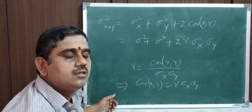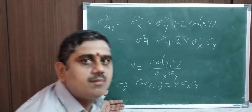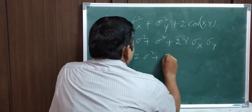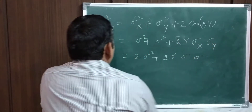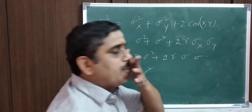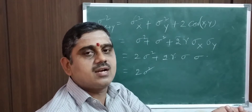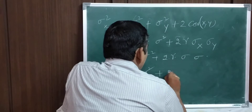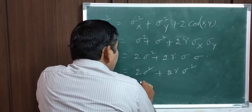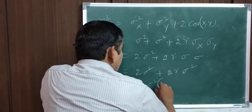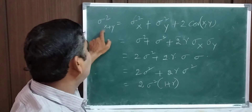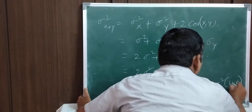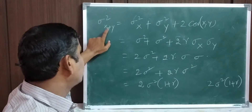Since x and y have the same variances, sigma squared x equals sigma squared y equals sigma squared. Also, the formula for correlation gives covariance(x, y) equals r times sigma x times sigma y. Substituting, variance of x plus y equals sigma squared plus sigma squared plus 2r times sigma times sigma, which is 2 sigma squared plus 2r sigma squared, equal to 2 sigma squared times (1 plus r).